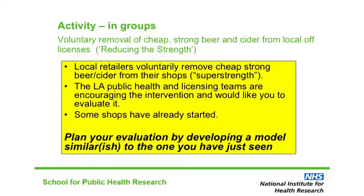Imagining as we normally deliver this to a room full of practitioners sitting round tables, at this point we give them usually up to an hour to consider how to do a logic model and plan an evaluation for a different type of alcohol intervention. The alcohol intervention in question is the voluntary removal of cheap, strong beer and cider from local off-licences — sometimes called 'reducing the strength'. Local retailers voluntarily remove cheap, strong beer and cider, the super-strengths, from their shops, with some encouragement from local public health and other practitioners. The local authority public health and licensing teams are encouraging the intervention and would like you to evaluate it. Some shops have already started. Can you plan your evaluation by developing a model similar to the one you've just seen for cumulative impact policies?